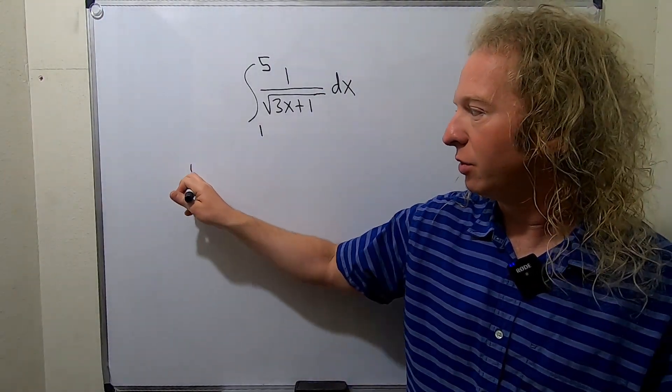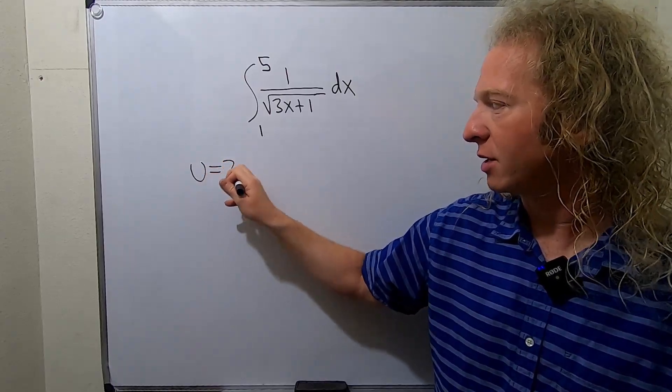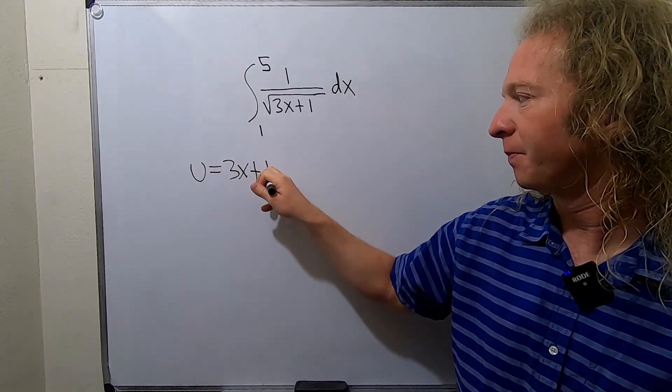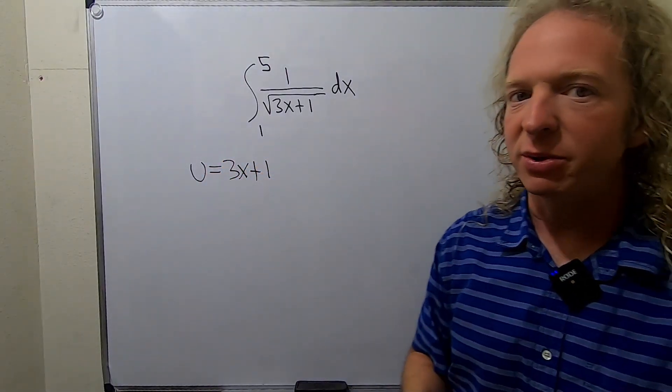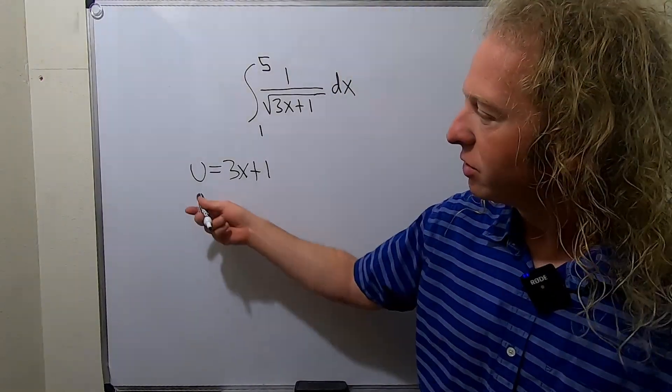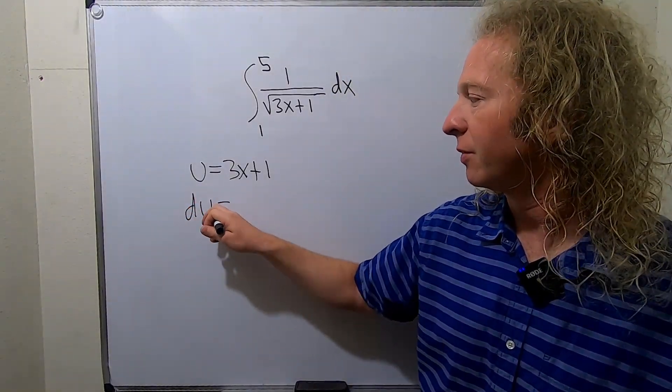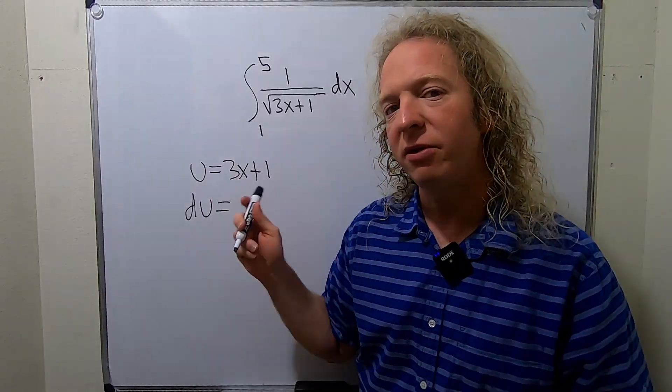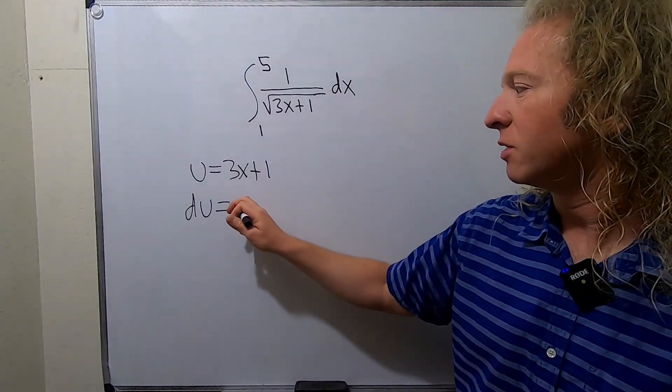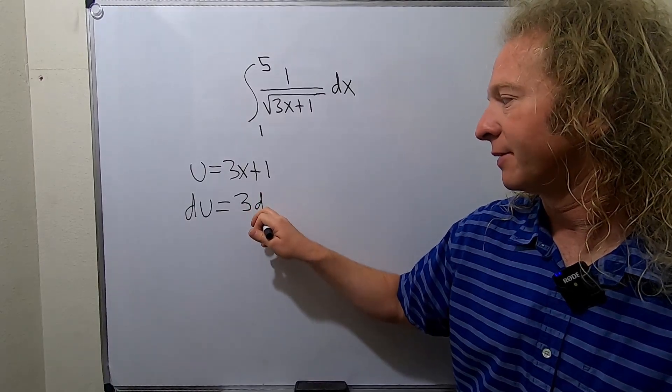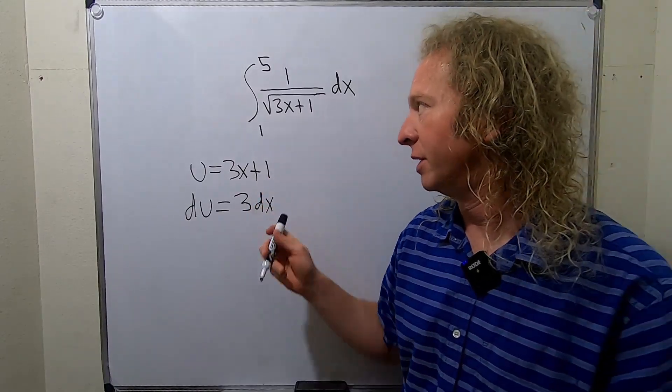So we'll start by letting u equal 3x plus 1. Then you always compute du as normal. So du is the derivative of u. Here we compute this derivative. The derivative of x is 1 so we simply get 3dx, and the derivative of 1 is 0.